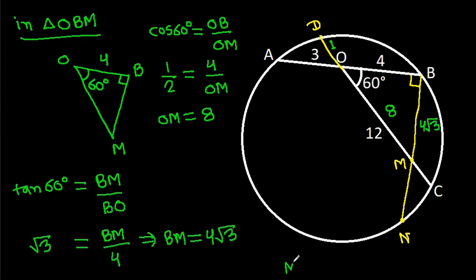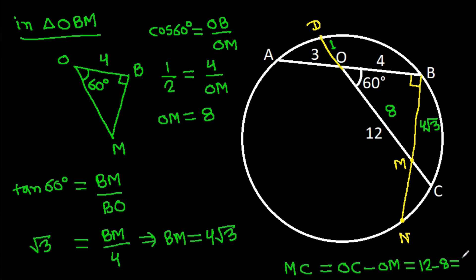And now, MC equals OC minus OM, that equals 12 minus 8, which is 4. So MC is 4.